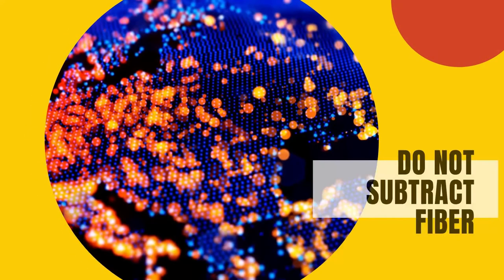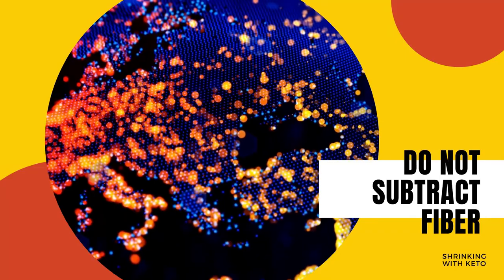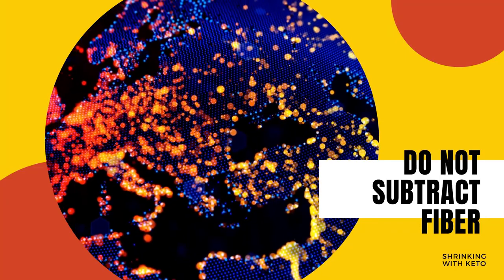An important side note: if you're reading a nutritional label from Europe, or if you are in Europe, you do not subtract the fiber, because the fiber has already been subtracted from the total carbohydrates — even though it is still written on the label. Therefore, you only subtract the sugar alcohols to get your net carbs from a European Union label.